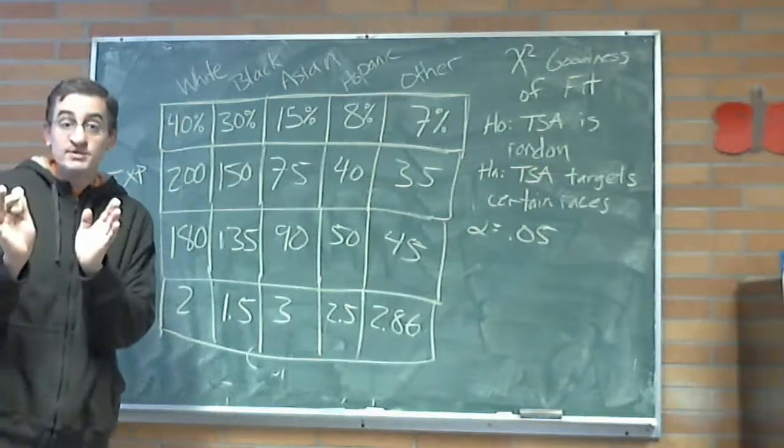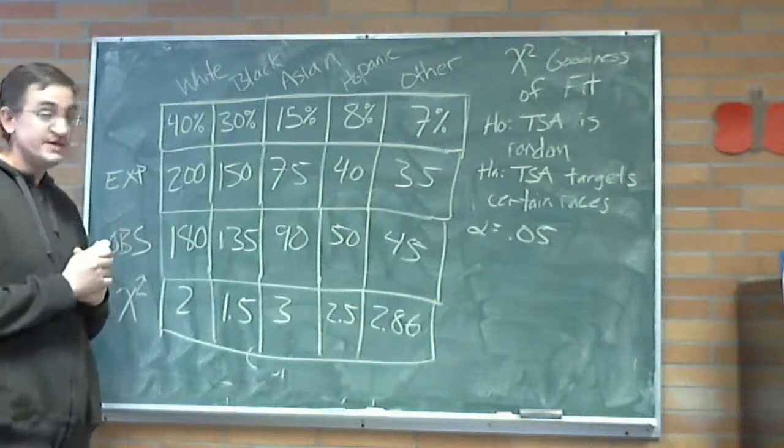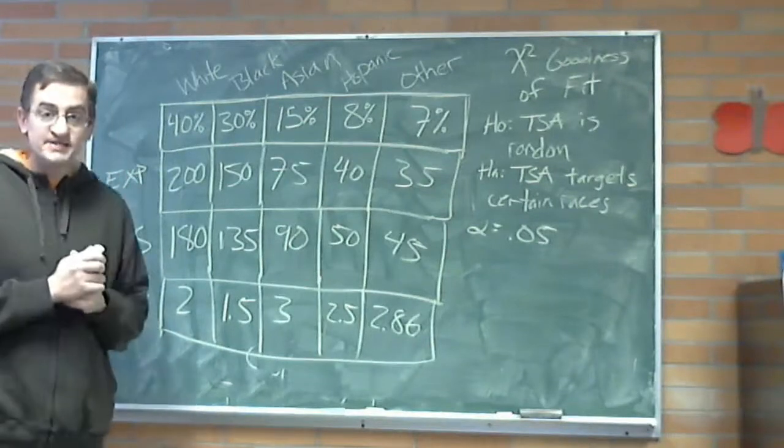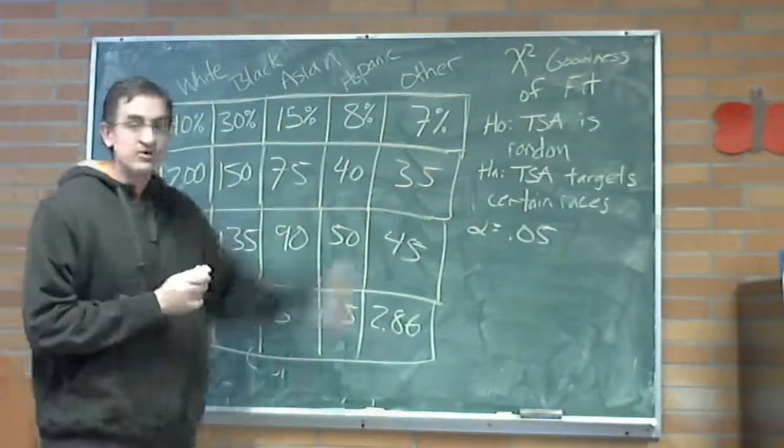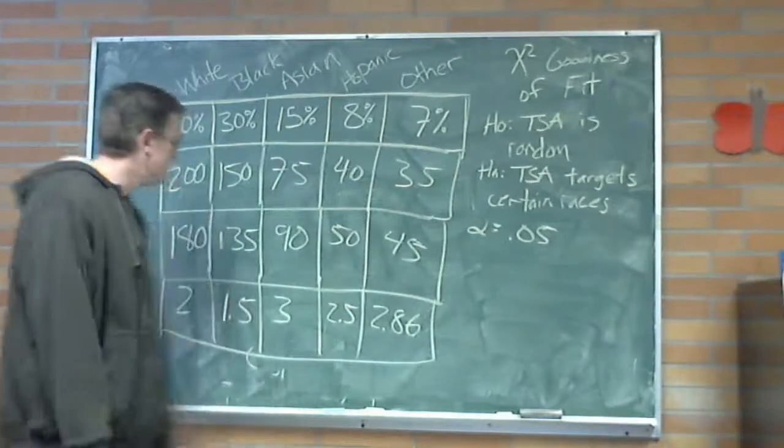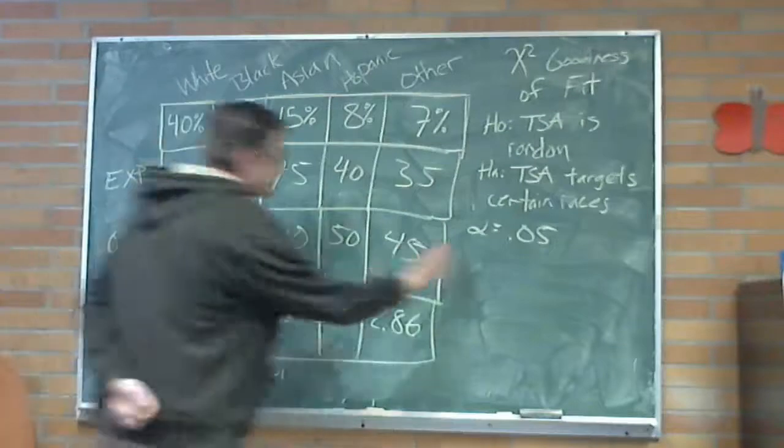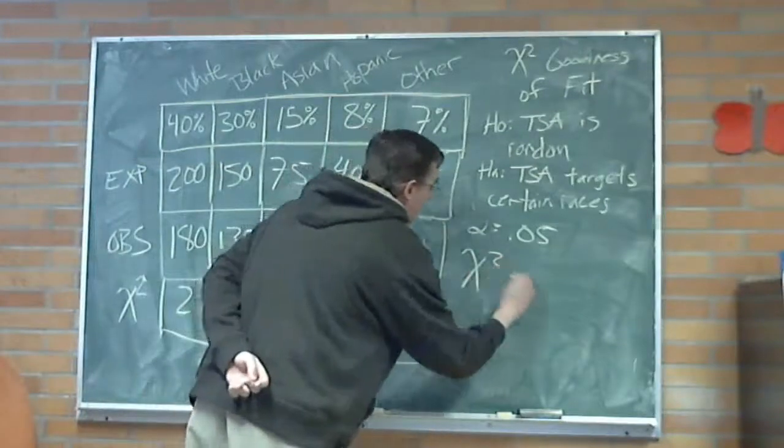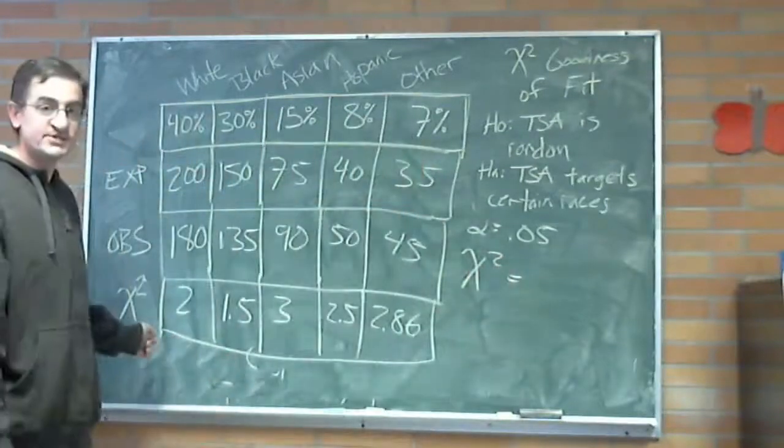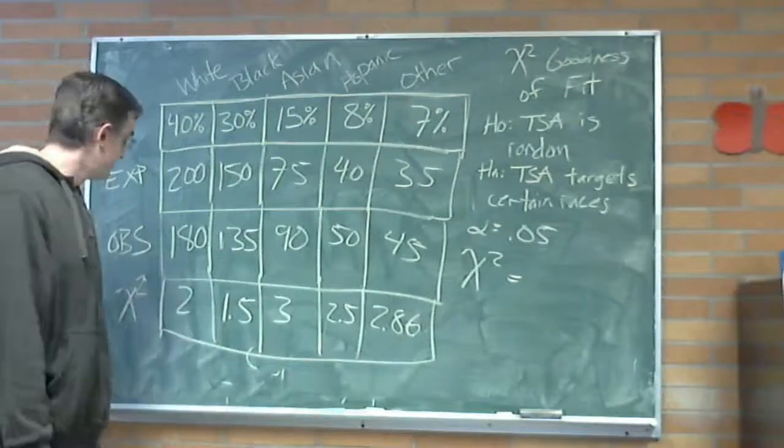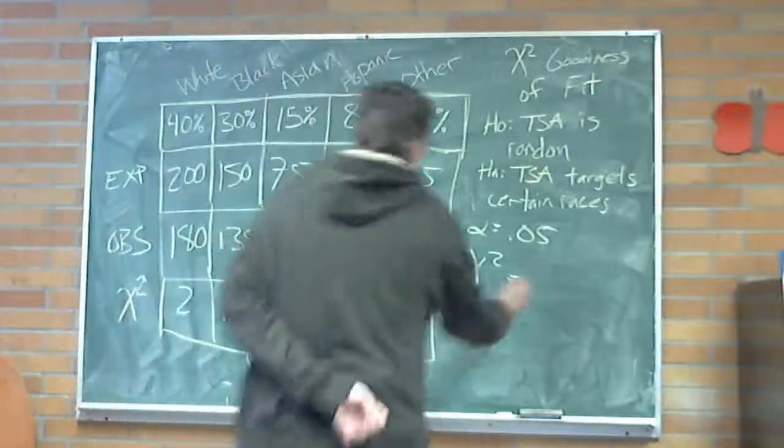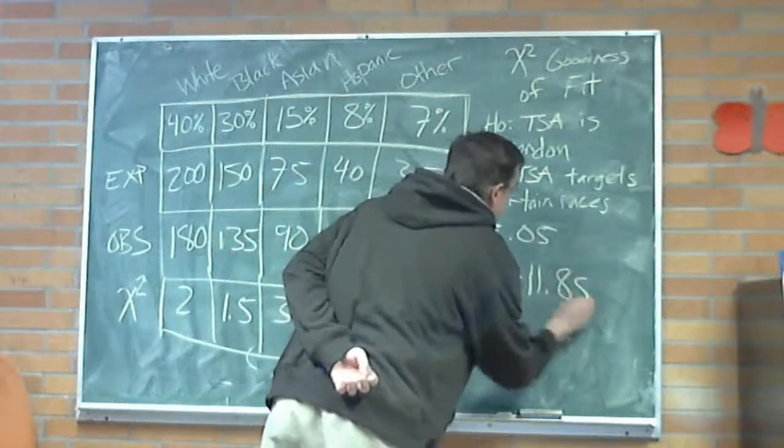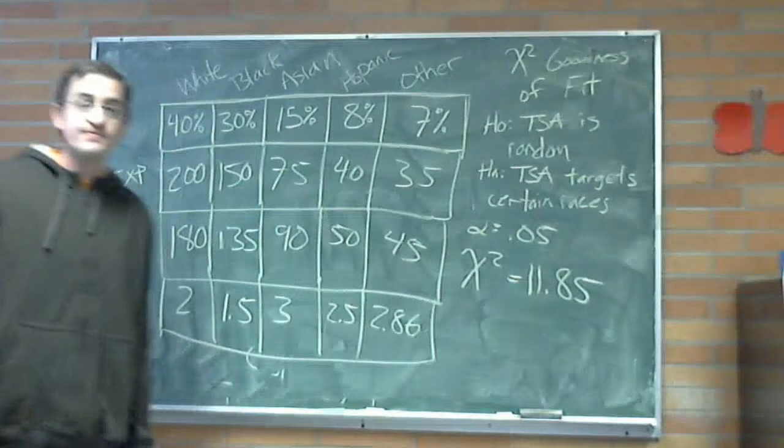And wait! Let's check whether we have a large enough sample size before we continue. How large do we need? I need all my expected values to be greater than five. Check, check, check, check, check. Okay, fine. We're good. How do I get my final chi-squared value? I'm going to add up these partial chi-squareds, same as we did before. If I add all of them up, my cheat sheet says 11.85.